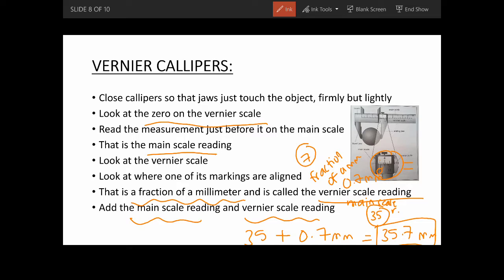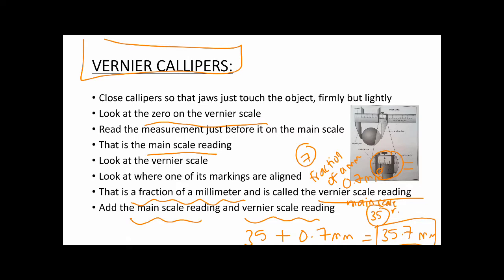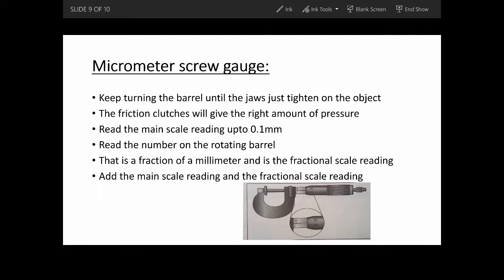That's how you use a vernier caliper. Next, the micrometer screw gauge. It has a rotating barrel, jaws, and friction clutches. To measure an object, you keep turning the barrel until the jaws tighten on the object — just enough to hold it in place. The friction clutches give the right amount of pressure.